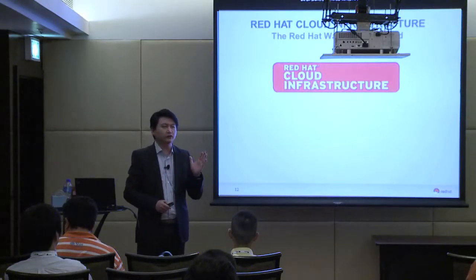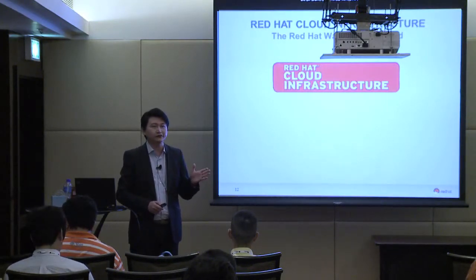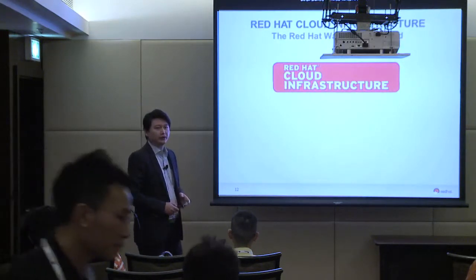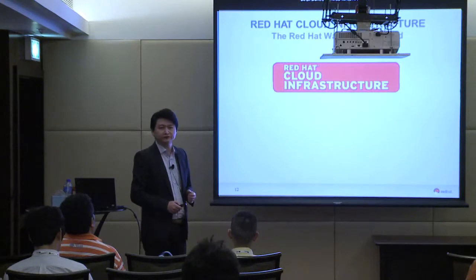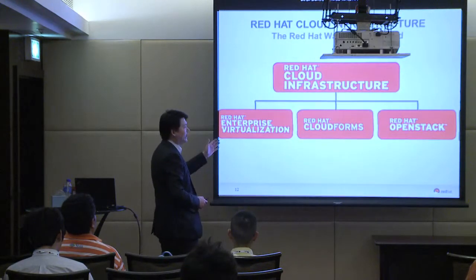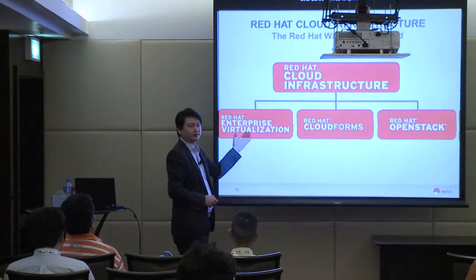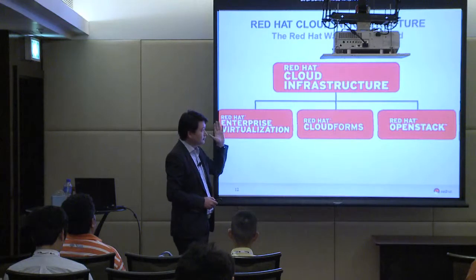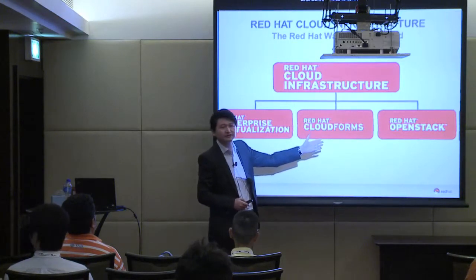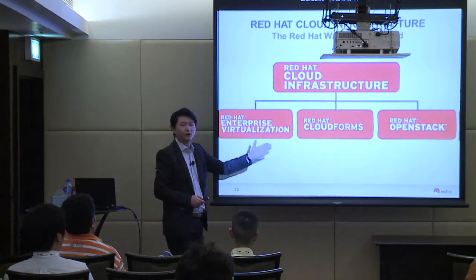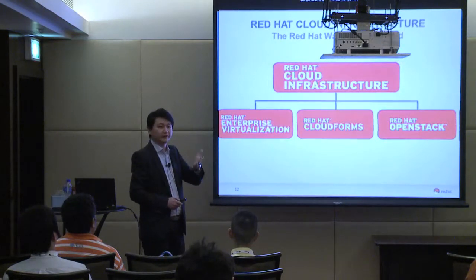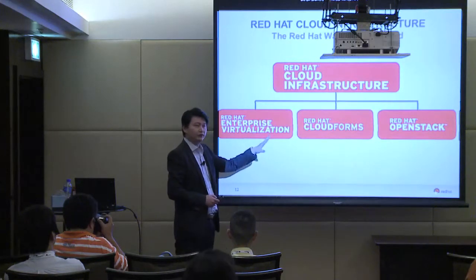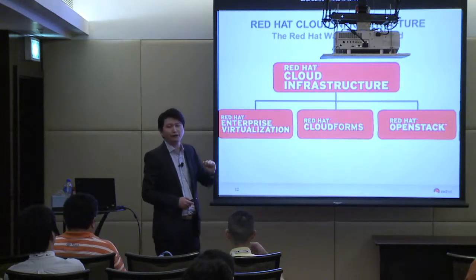So here comes our way to the open cloud. We have a product called Red Hat Cloud Infrastructure. It consists of three solutions. The first is Red Hat Enterprise Virtualization, which caters to traditional application workloads. The second, of course, is Red Hat OpenStack, for the future cloud environment you are thinking of. And finally, we have tools to tie the old world and the new world together through our Red Hat CloudForms management solution.